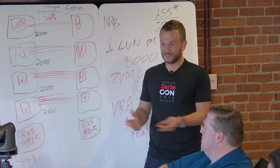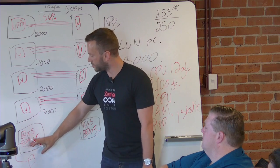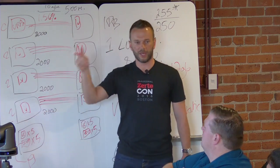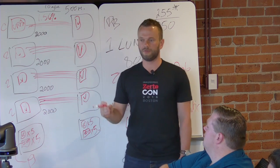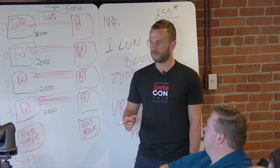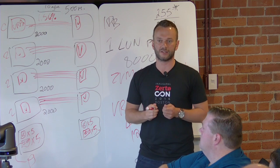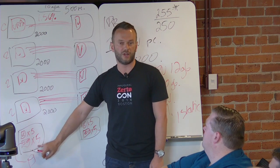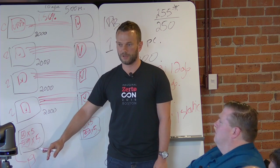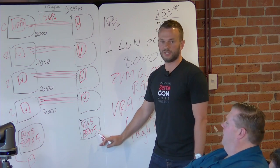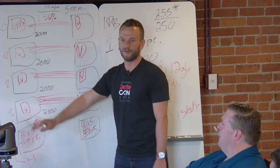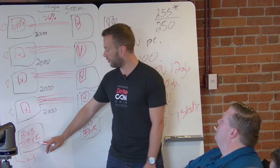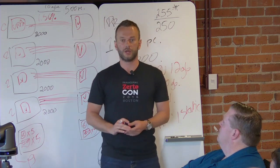We have five vCenters and five Zerto managers on the DR side, so if you lose access to the primary site you can still manage everything from DR. The Zerto manager for the management pod itself is used to protect the other four Zerto managers — Zerto protecting Zerto — just as you have a vCenter to manage vCenters. You replicate them within the same vCenter, so if there's a logical failure you can rewind them back in time.